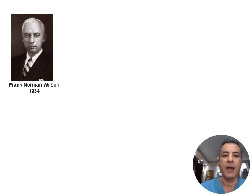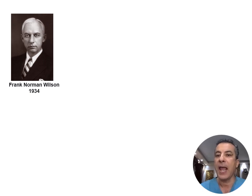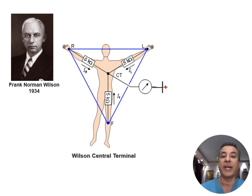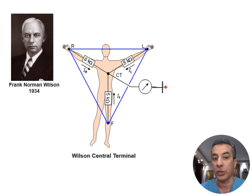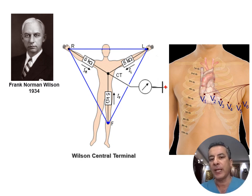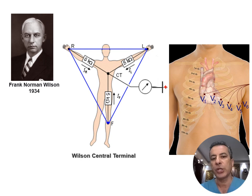In 1934, Frank Norman Wilson at the University of Michigan introduced a significant innovation: the central terminal and unipolar recording. He connected the three points of Einthoven's triangle with five kilohm resistors to create the negative pole of his terminal. The positive pole, or exploring electrode, was used to record local potentials, which later evolved into the unipolar precordial leads. In 1938, the American Heart Association and the Cardiac Society of Great Britain jointly published recommendations for recording the exploring leads from six sites designated V1 through V6, positioned across the precordium.